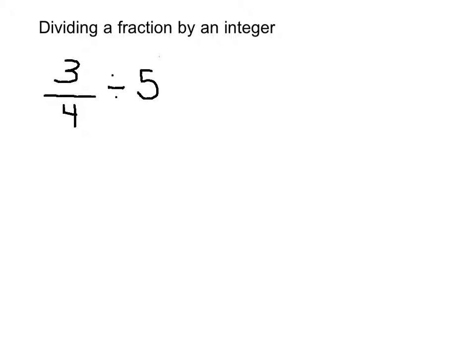Now remember that every whole number has that imaginary 1 underneath it. So we can rewrite this now as 3 fourths times the reciprocal of 5 over 1, which is 1 over 5.